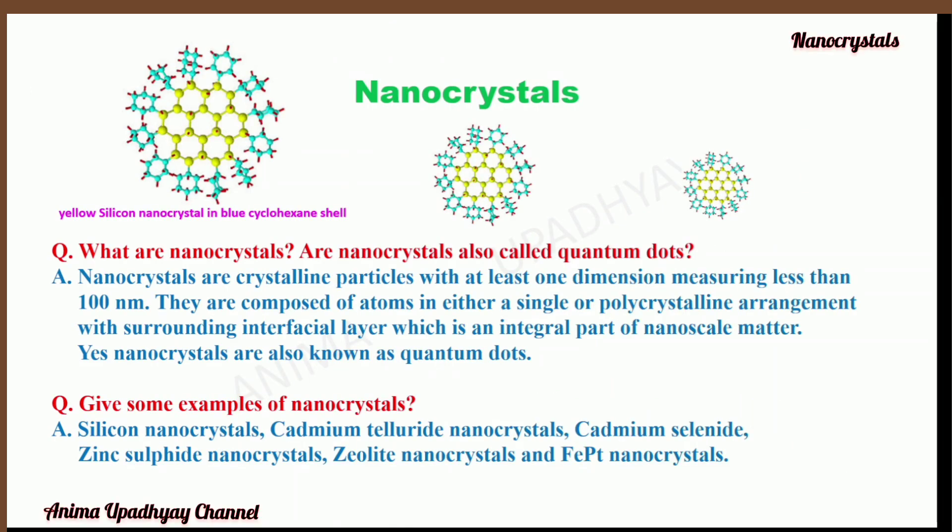What are nanocrystals? Are nanocrystals also called quantum dots? Yes, nanocrystals are also known as quantum dots. They are crystalline particles with at least one dimension measuring less than 100 nanometers. They are composed of atoms in either a single or polycrystalline arrangement with a surrounding interfacial layer, which is an integral part of nanoscale matter. In the figure, you can see the yellow silicon nanocrystals within the blue cyclohexane shell.